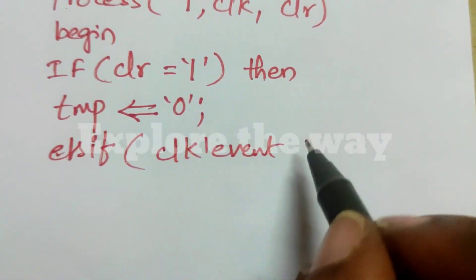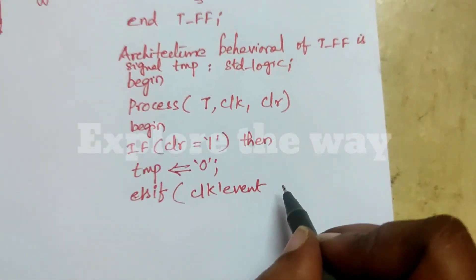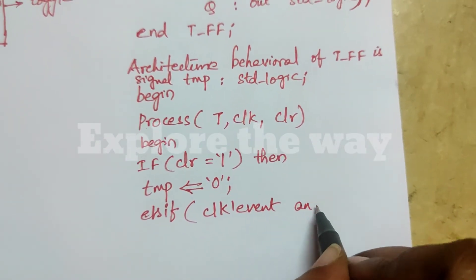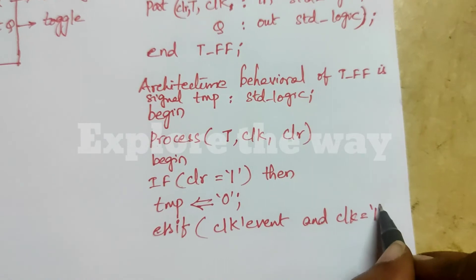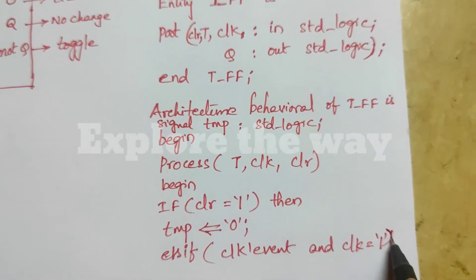To represent positive edge, we can describe positive edge of clock like this: clock tick event and clock equal to one.